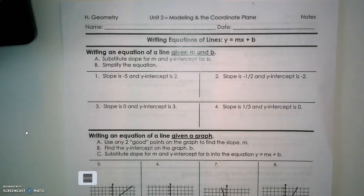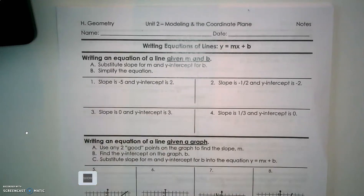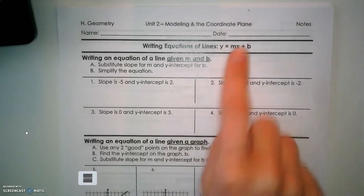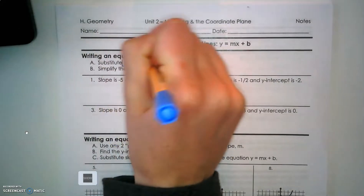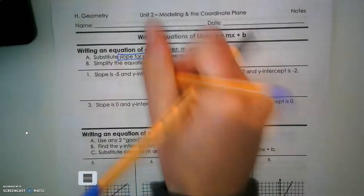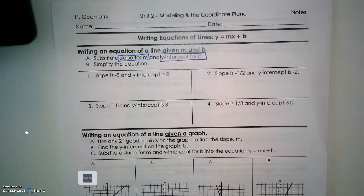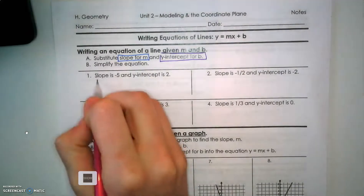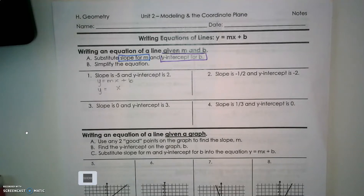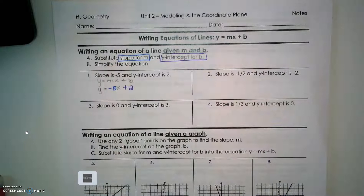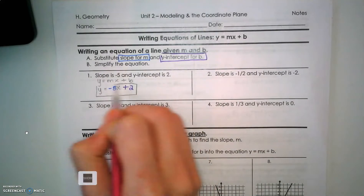One way we can write an equation is if we're given the slope and the y-intercept. Remember the equation of a line is y equals mx plus b, where m represents your slope and b represents your y-intercept. We'll work to simplify the equation if necessary. Following these steps, y equals mx plus b: I substitute in my slope, which is negative 5, and my y-intercept, which is positive 2, giving plus 2.